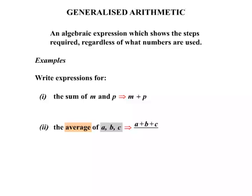Then we divide by the number of scores we have. In this case we have three scores, so we divide by three. There we have it. The average of A, B and C is A plus B plus C, all divided by three.